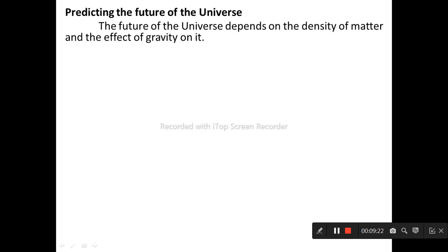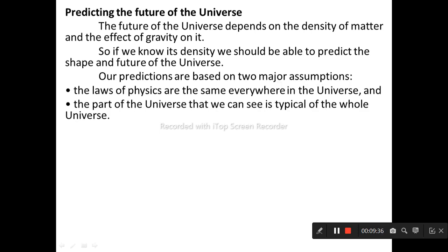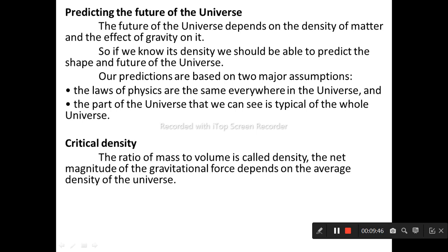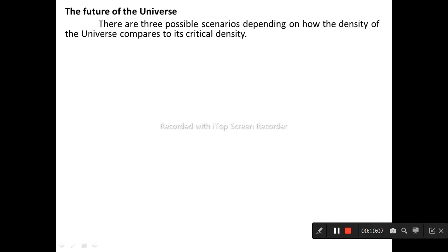The future of the universe depends on the density of matter and the effect of gravity on it. So if we know its density, we should be able to predict the shape and future of the universe. Our predictions are based on two major assumptions: the laws of physics are the same everywhere in the universe, and the part of the universe that we can see is typical of the whole universe. The ratio of mass to volume is called density. The net magnitude of the gravitational force depends on the average density of the universe. The average density of the universe required to halt the expanding universe, which could be after billions of years, is called critical density.